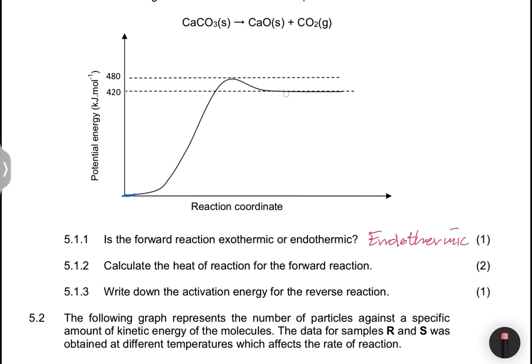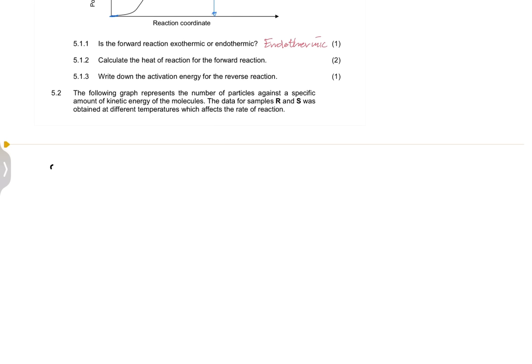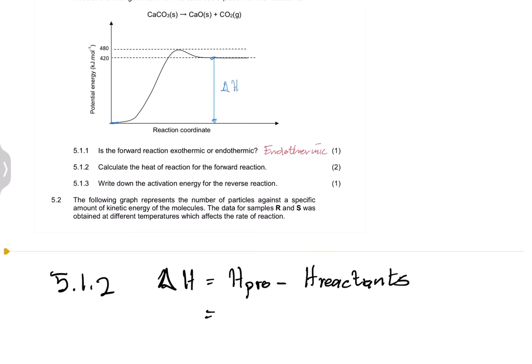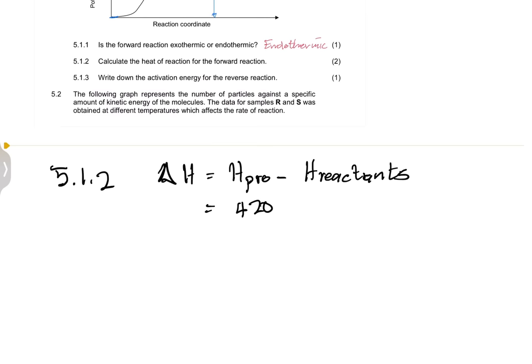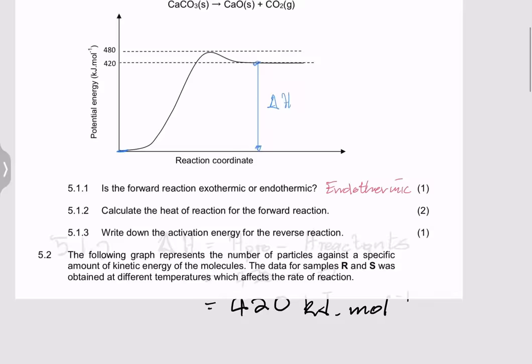They're looking for the heat of the reaction. You always take the energy of the products and subtract the energy of the reactants — that's delta H. So my delta H value: energy of products minus energy of reactants. The energy of the products is 420, minus zero, so that gives us 420 kilojoules per mole. That's the heat of the reaction.